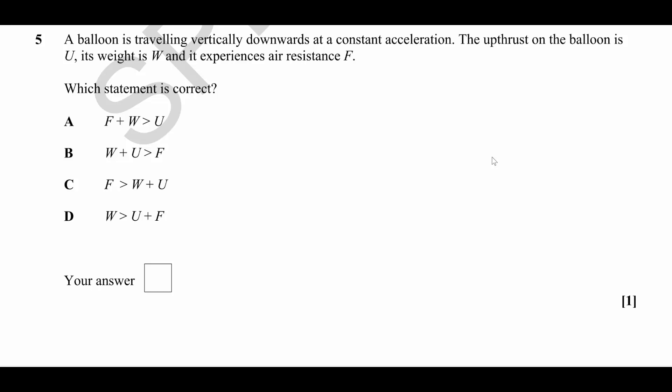Question number five describes a balloon that is accelerating downwards. It has up thrust, weight, and air resistance acting upon it, and we need to say which of these statements is correct. Well, I would not go near this question without first drawing a diagram.